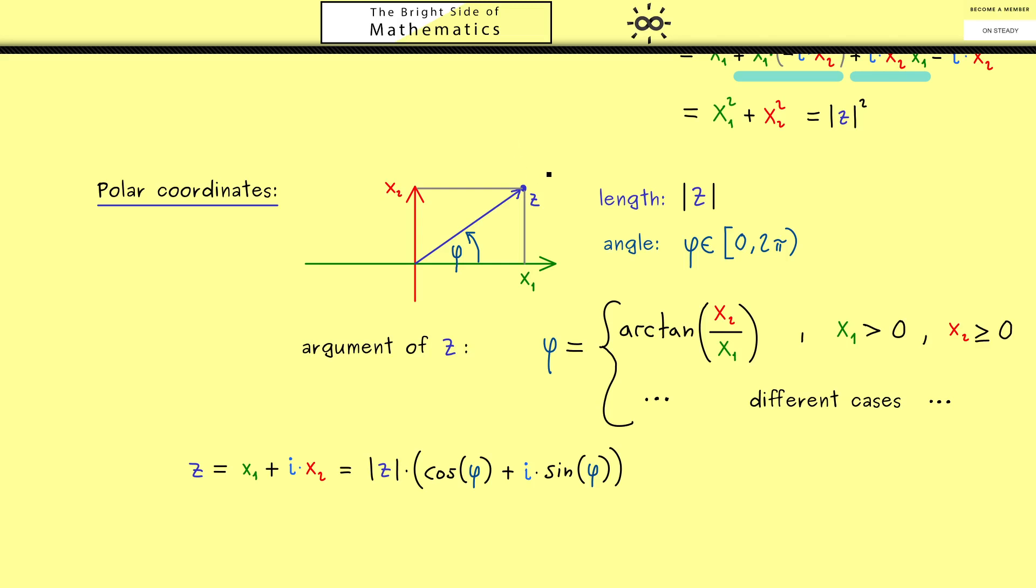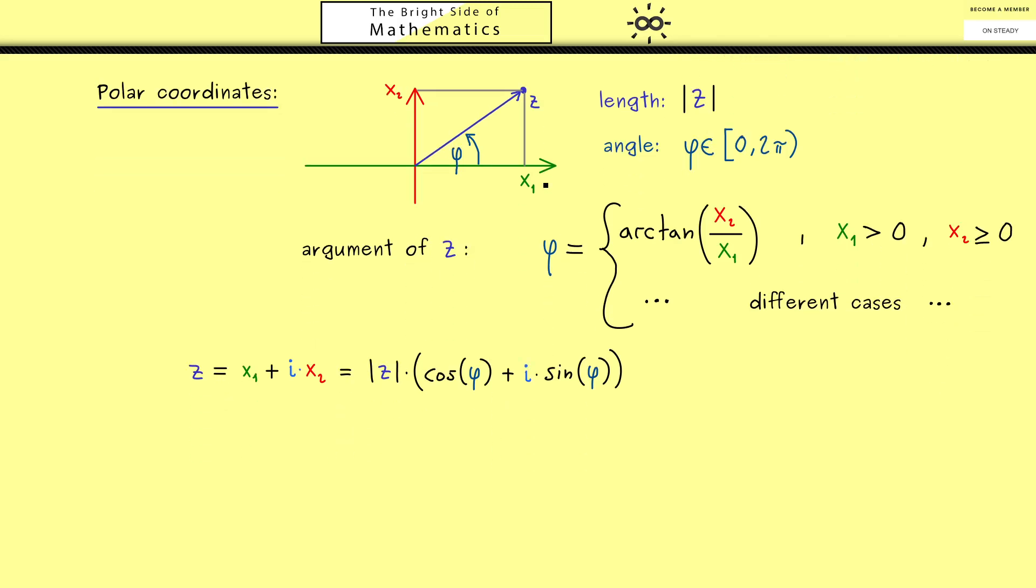Now to close this video let's look at an example. So here let's simply start with a complex number z. So maybe let's take it as 3 plus 3i. And then the first step would be what is z bar, the complex conjugate. And now you already know this is the same thing just with minus i instead of plus i.